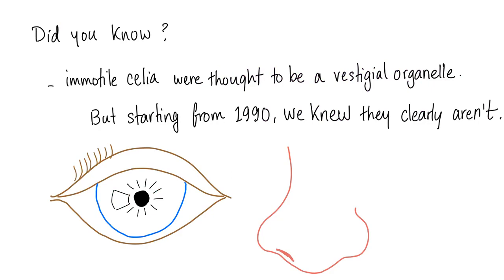When we first discovered immotile or primary cilia, we thought they were vestigial organelles. But starting from 1990, we found them in sensory organs, such as the rods in your retina, as well as the olfactory knobs. So clearly, they are not vestigial organelles.